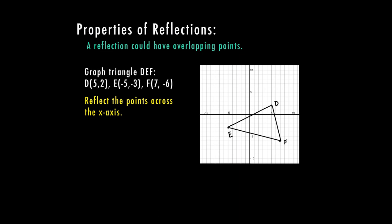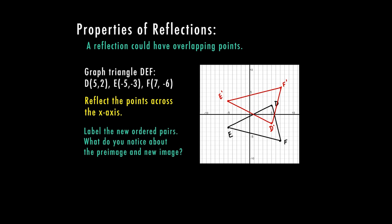It wants me to reflect the points across the x-axis. Starting with D — it's two from the x-axis, so I go two in the other direction. E is three from the x, so I go up three. F is six from the x, so I go up six in the opposite direction. Now I have my triangle reflected across the x-axis — and since the triangle went across the x-axis, the reflection is actually overlapping with the original shape. The new D is at (5, −2), E is at (−5, 3), and F is at (7, 6).